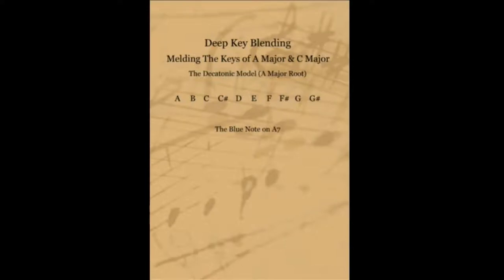In a 12-bar blues, we have a 1 dominant 7, 4 dominant 7, and 5 dominant 7. Now let's look at the decatonic model to see if we can get a blue note on all three of these chords. We'll be using A7 as our 1 dominant 7, D7 as our 4 dominant 7, and finally E7 as our 5 dominant 7.